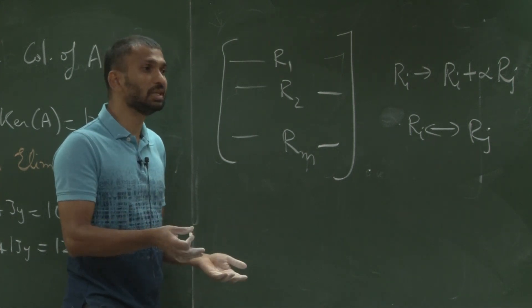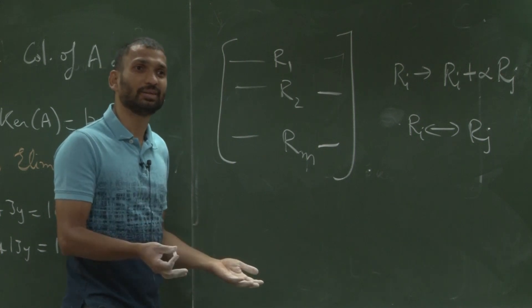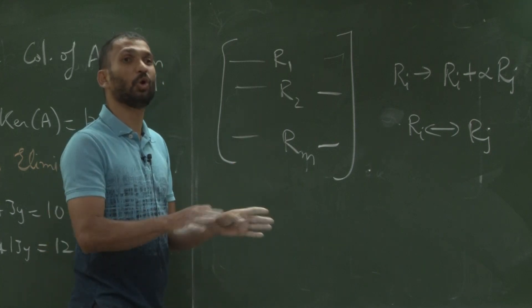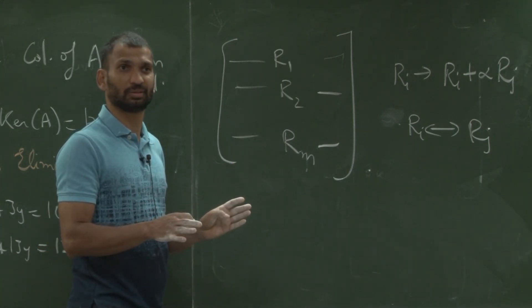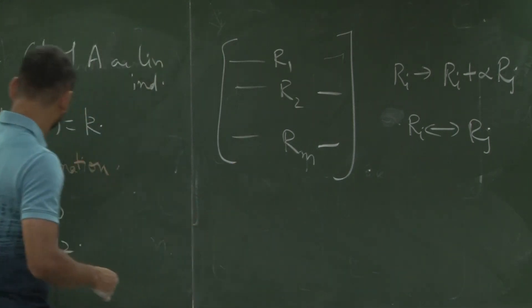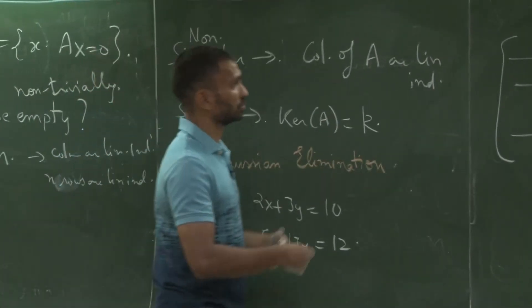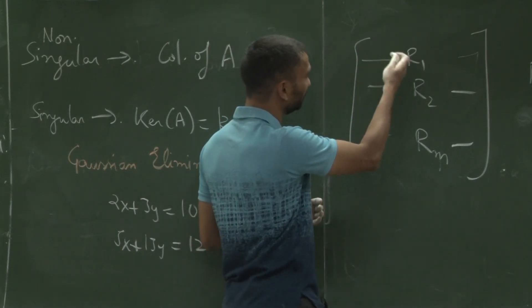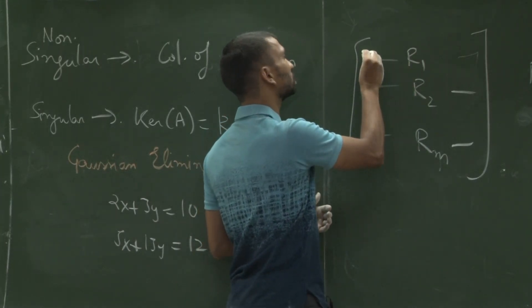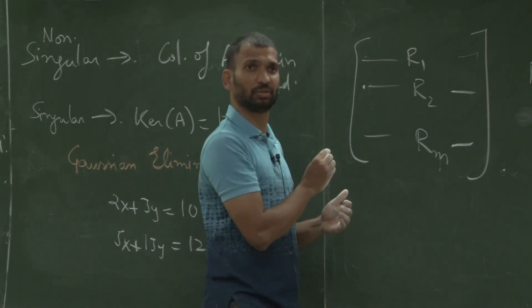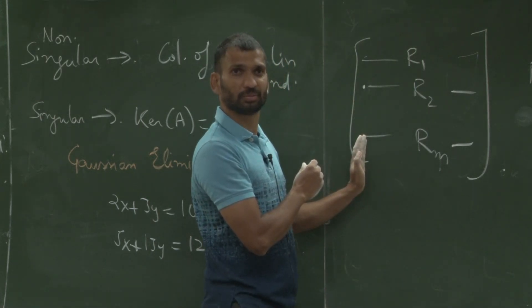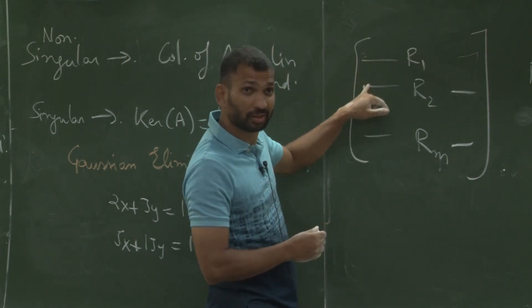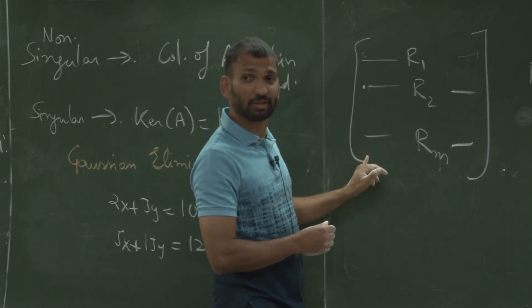When is Ax equal to b easy to solve? When A is diagonal. So all these attempts are trying to make this matrix look like a diagonal matrix, right. This is what you were doing even here. So what do you do? Suppose there has to be a row whose first entry is non-zero. If it is not, then I can forget about the first one. So get this at the first place. Use that to make all the entries below zero.